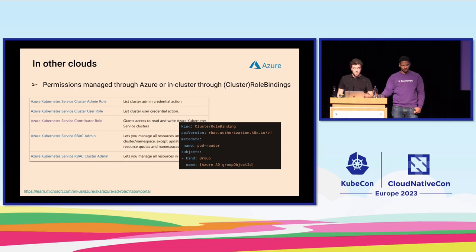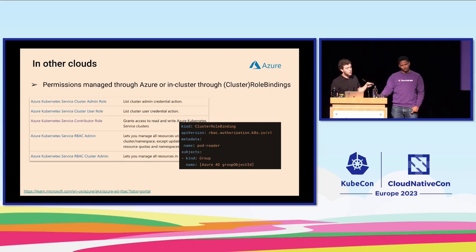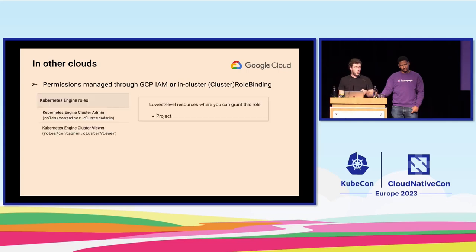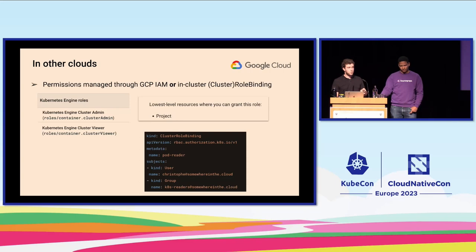That's for EKS. In other clouds, in Azure you can manage access to the cluster through Azure RBAC — there are roles specific to the Kubernetes API that give different levels of access. You can also give access from a cluster role binding. In GCP, you can do both: you have GCP roles like Kubernetes Engine cluster viewer and cluster admin, but the main issue is you can only assign them at the project level, so for cluster-level access you use a role binding or cluster role binding referencing Google groups or users.